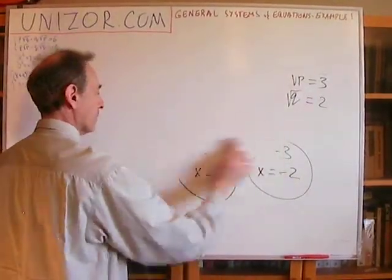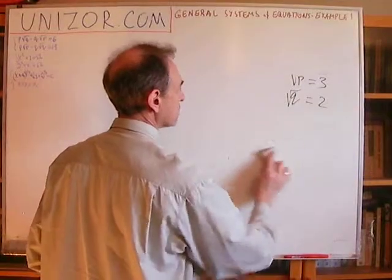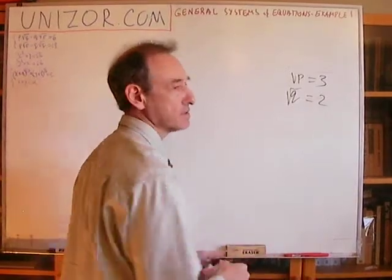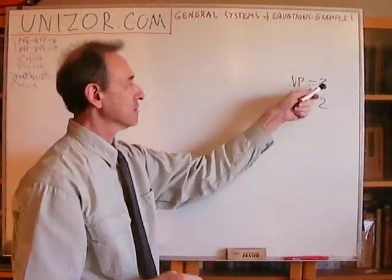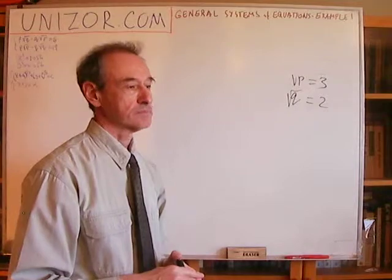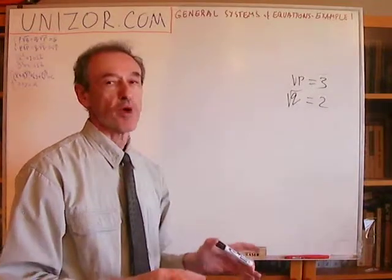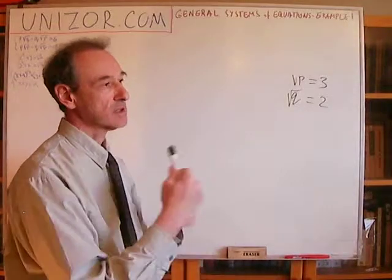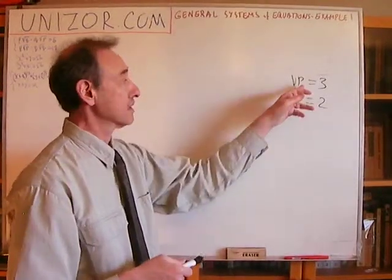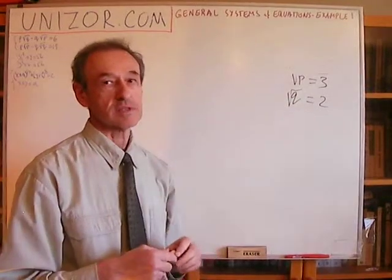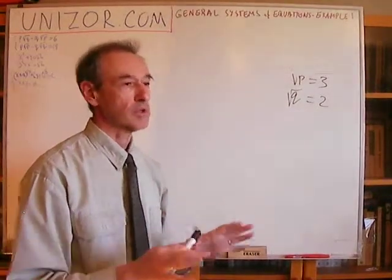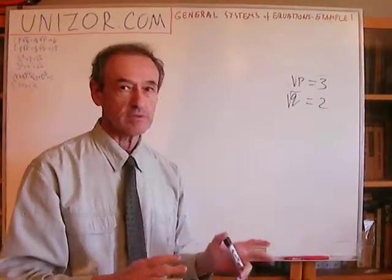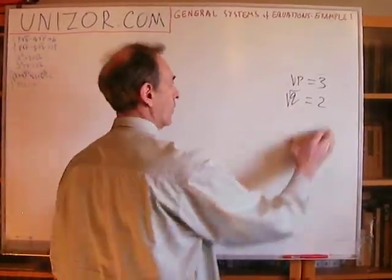Just a note on the negative values minus 3 and minus 2 that I discarded: even if you consider the negative square roots, P would still equal 9 and Q would still equal 4. But the problem means that square root of P is the arithmetic value, which is always positive, so discarding the negative pair is the right thing.